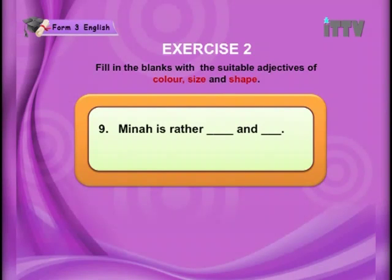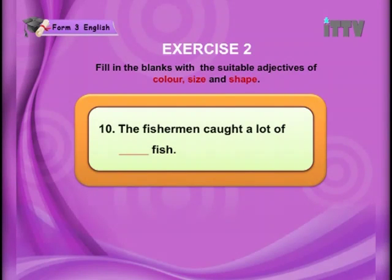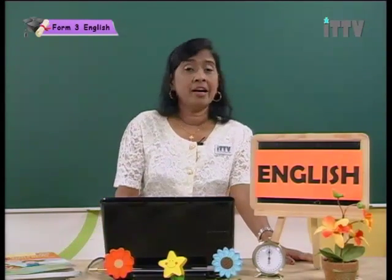Number ten: The fisherman caught a lot of blank fish. Think of the correct adjective. Answer: The fisherman caught a lot of small fish. So you get a clear picture — what kind of fishes? Small fishes.